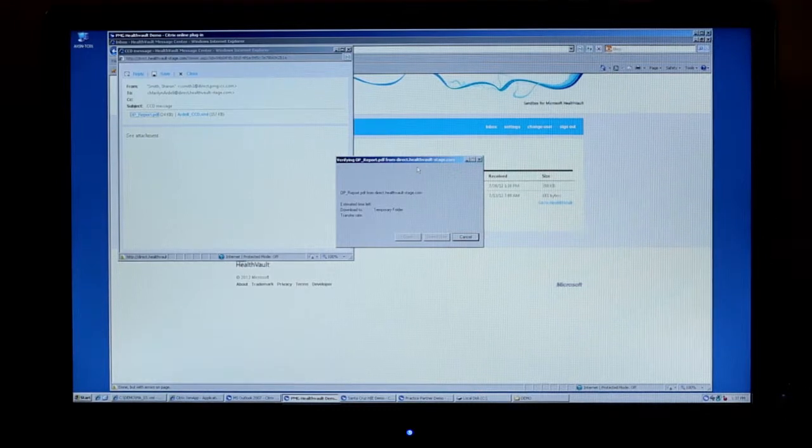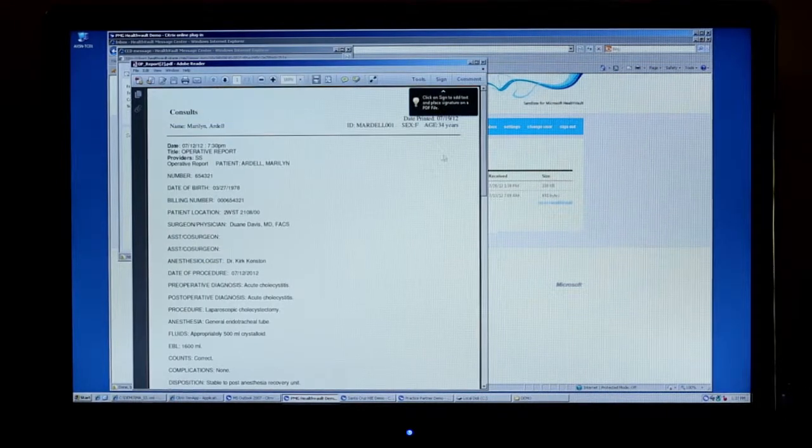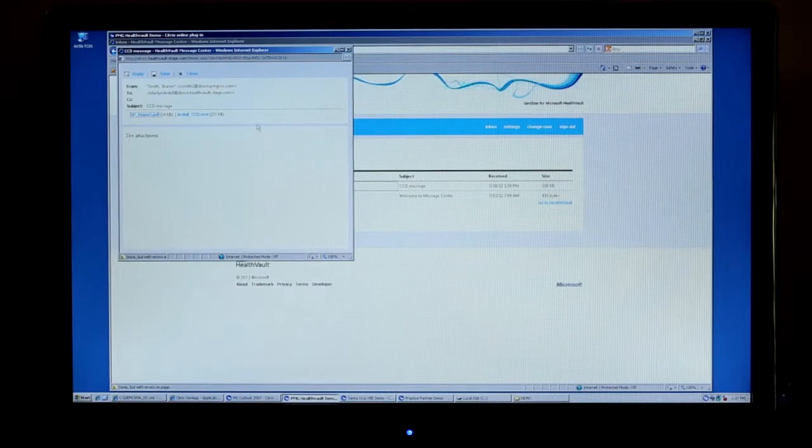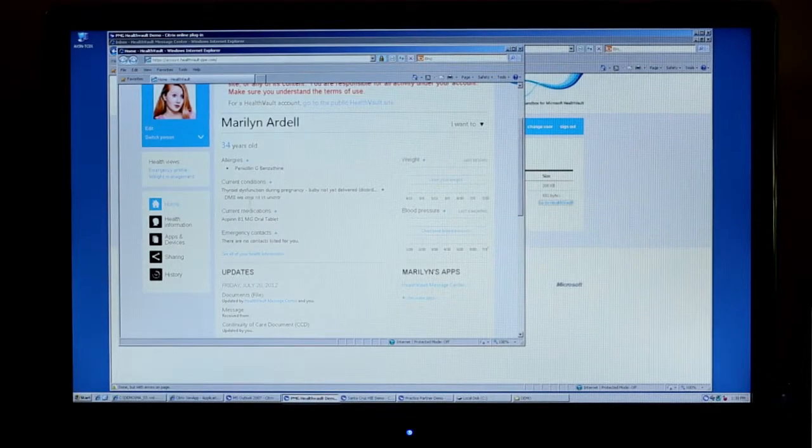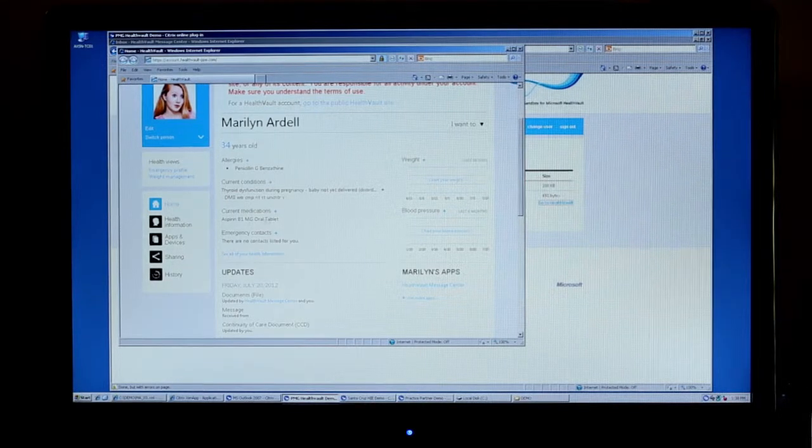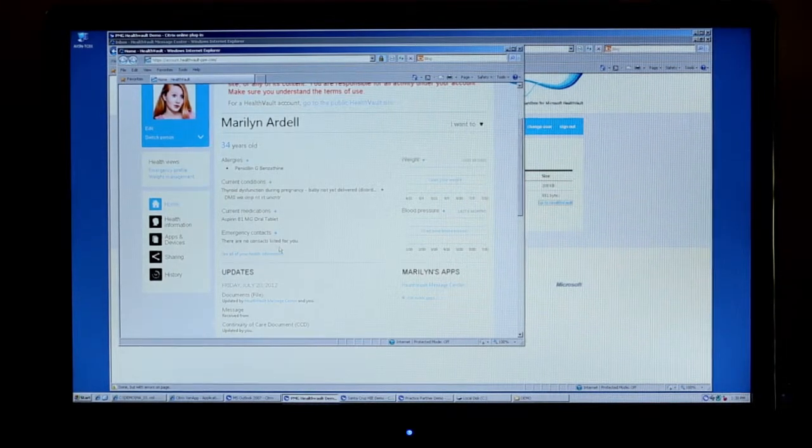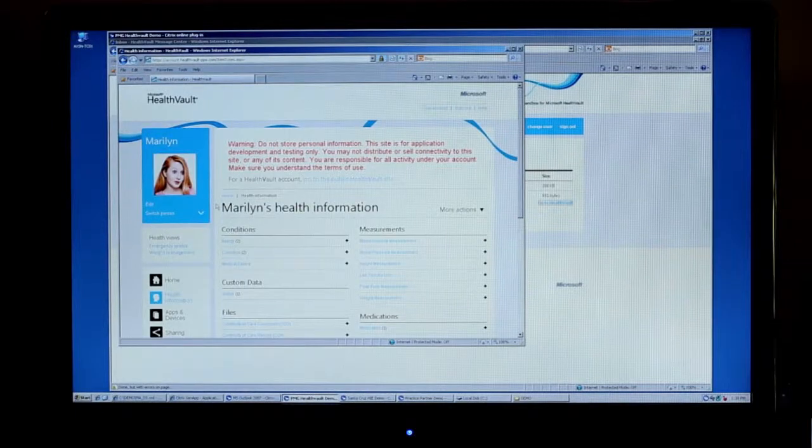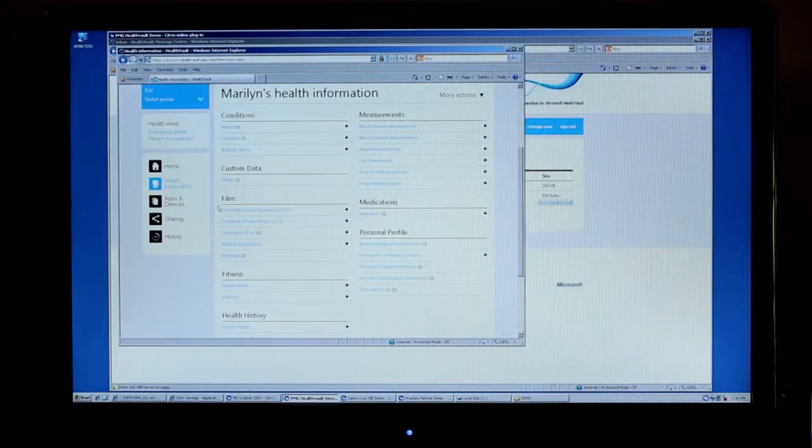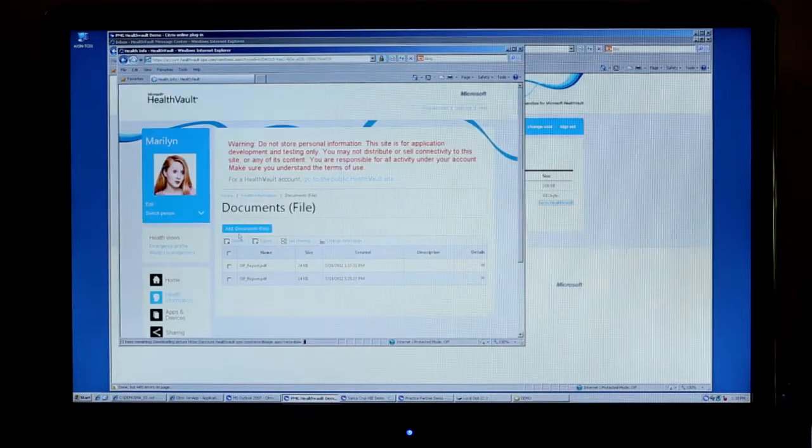Which is a PDF document. We'll go to Health Vault now to look at those documents and that data in Health Vault. Health Vault has pulled in the discrete elements of the CCD and put them into her Health Vault account, updated her allergies and medications, and then also took the file, the op report, and put it under documents and files. That concludes the visit.